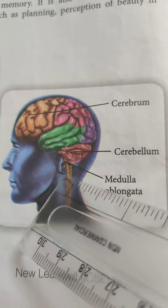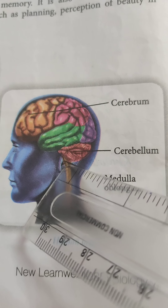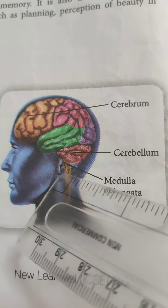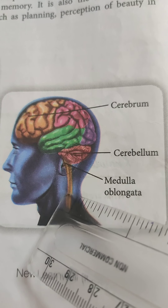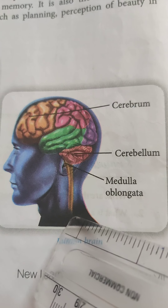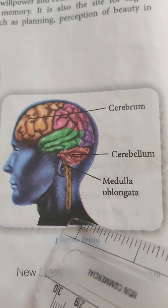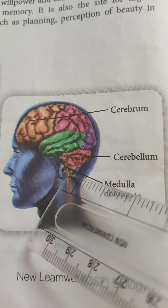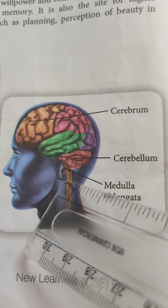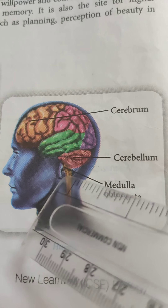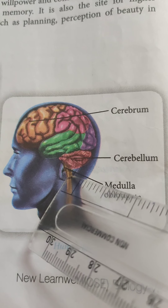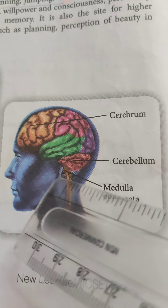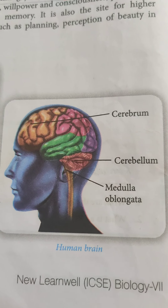This is medulla oblongata. It is the lowest part of the brain which continues downwards and merges with the spinal cord. It is also called the brain stem. It regulates all involuntary functions such as beating of the heart, peristalsis of the alimentary canal, and respiratory movements.